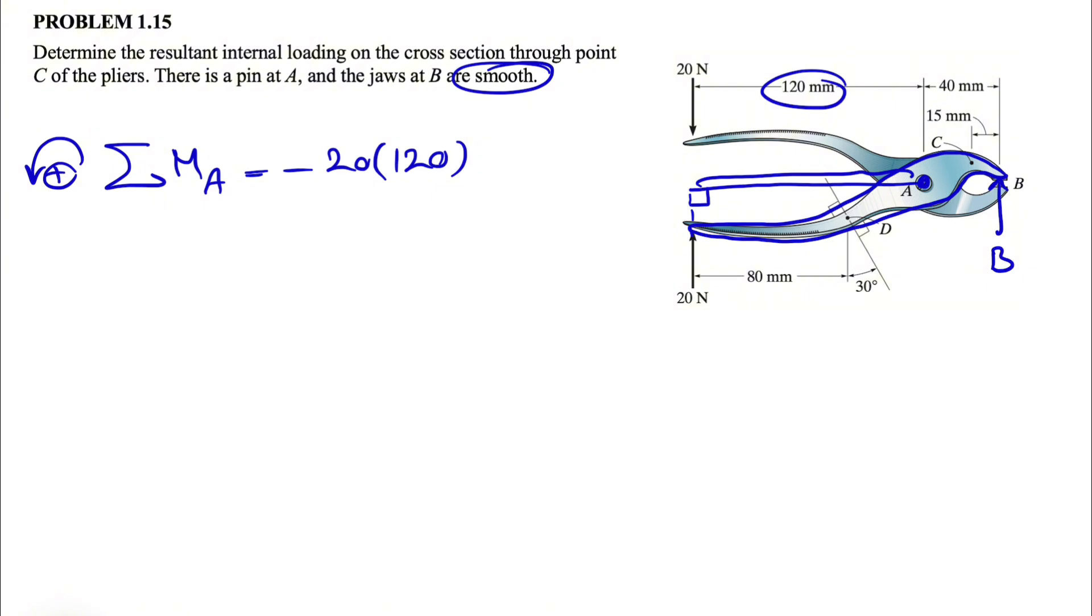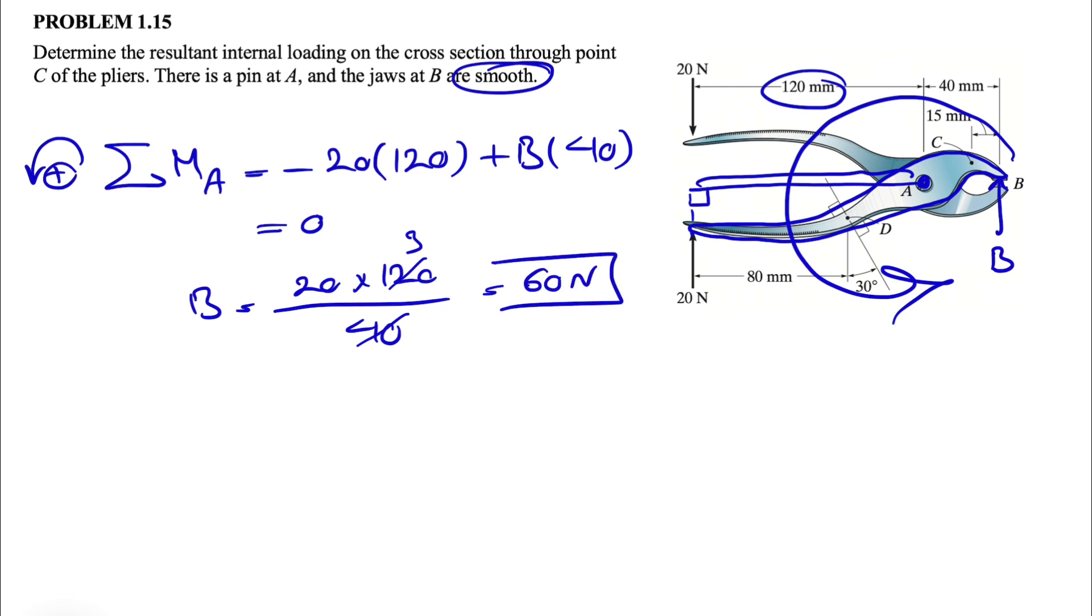We don't need to do any unit conversion because it will be cancelled at the end, but we can do unit conversion as well. And the other moment is the moment of B, but since it's a counterclockwise moment we have a positive sign, B times distance would be 40 millimeters is equal to zero. So here we can find our B: 20 times 120 divided by 40, so 3, that's going to give us 60 newtons for B.